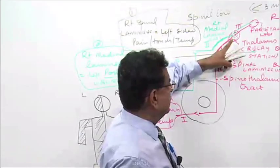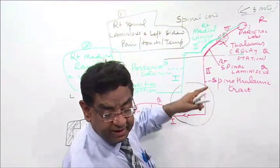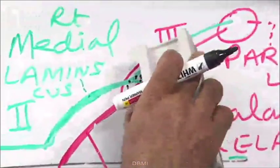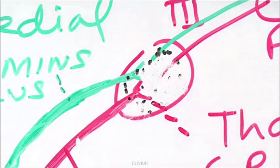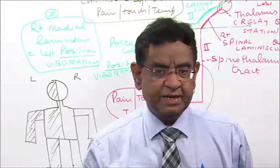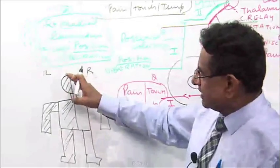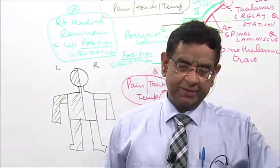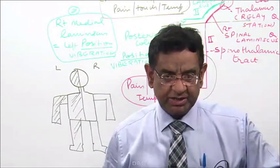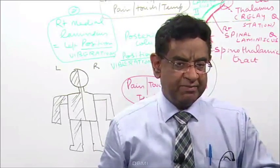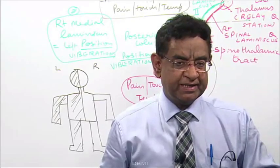Now look at the board again. This bleeding in the thalamus — the body will remove all this blood by the action of macrophages. The thalamus will then start working again. But in the beginning stage of recovery, this gentleman who had complete hemi-anesthesia on the left side will experience intense burning sensation throughout the whole left side.